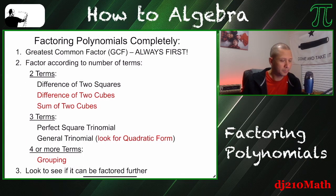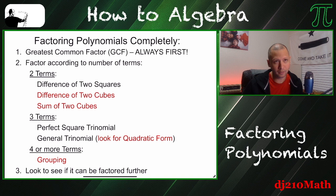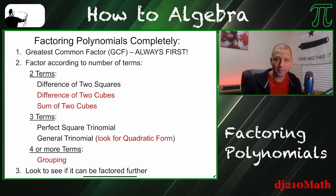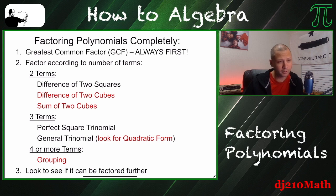Factoring polynomials completely. Step one: you always want to factor out the greatest common factor — GCF. Think of the GCF in terms of the coefficient, the numbers in front of the variables, and the variables themselves. You can do them both at the same time, or individually — taking out the number first, then the greatest common variable, and ultimately the GCF. You always want to do that first; that's the first starting point.